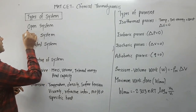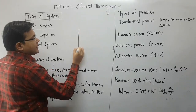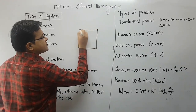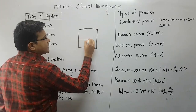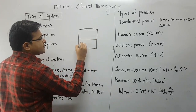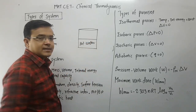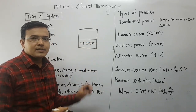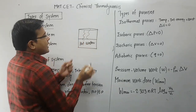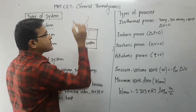If we want to understand what is the meaning of open system, consider one beaker with hot water inside. When the hot water is in a hot condition, vapors come out. When the vessel is open, it means vapors escape out — both matter and energy can be exchanged with the surroundings.